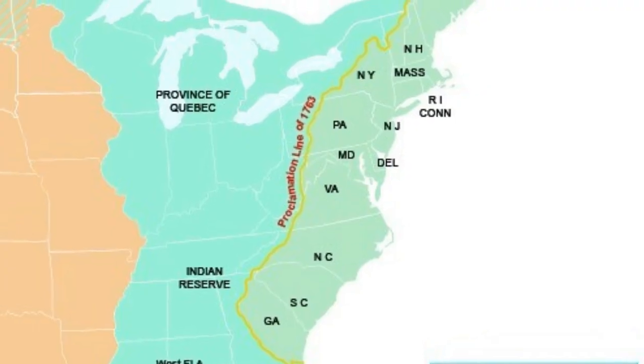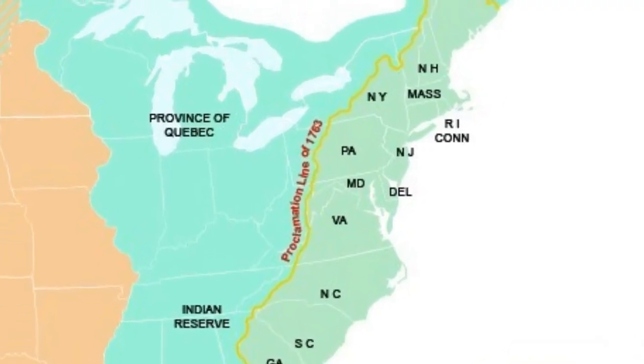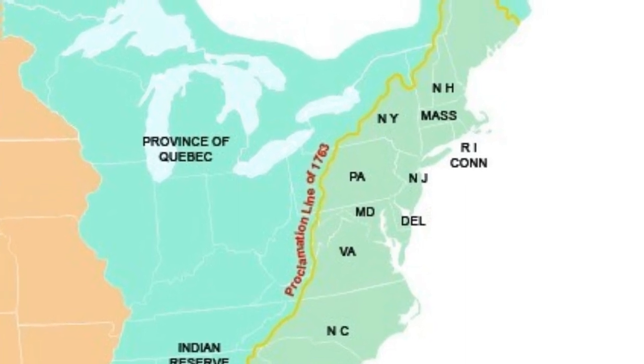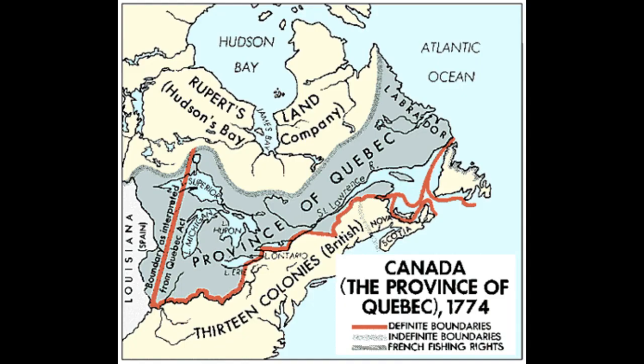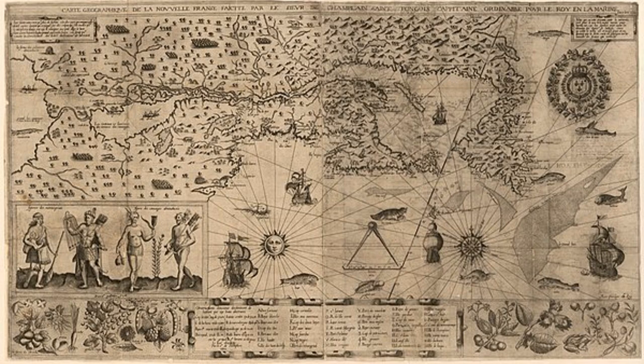The Quebec Act was intended to address grievances that had been expressed by the French-speaking population of Quebec. The Act granted French Canadians the right to practice their own religion and extended the boundaries of the province to include the Ohio Valley and parts of what are now Ontario and Michigan. It also granted the French-speaking population of Quebec a large measure of autonomy in terms of their internal affairs, allowing them to maintain their own legal, civil, and religious institutions.